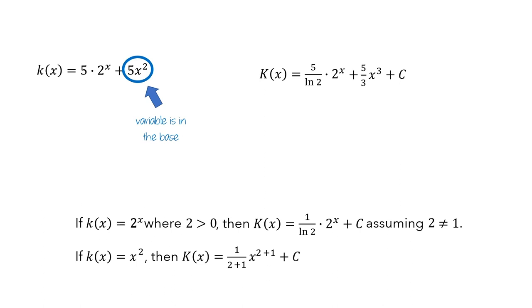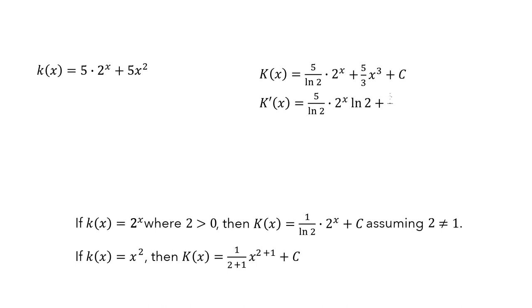Now we have a guess for the antiderivative. We can check this by computing the derivative of capital K. The natural log of 2s in the first term cancel, and the 3s in the second term cancel, giving us 5 times 2 to the x plus 5x squared. This is equal to k of x, so capital K is an antiderivative of k.